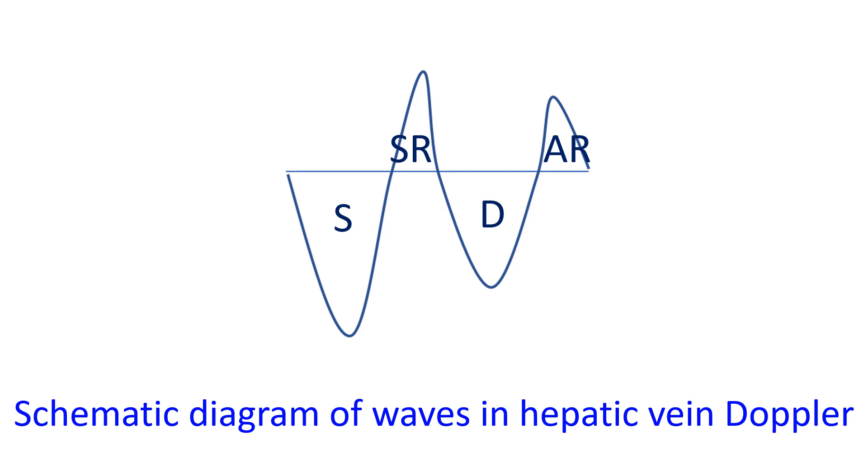Hepatic vein Doppler shows systolic S wave, systolic reversal SR wave, diastolic D wave, and atrial reversal AR wave. Normally the S wave is dominant as the IVC fills rapidly and empties the right atrium in ventricular systole. Small SR wave may be seen in late systole.